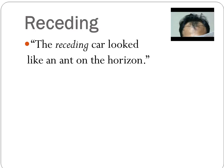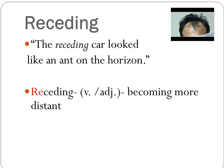So the first word is receding. The receding car looked like an ant on the horizon. Now in your notes, you don't need to write the sample sentence, but you should write the word, the part of speech and its definition, and any prefixes that appear on the slide. So based on this sentence and the image, what do you think receding means? Receding is a verb — it can also be used as an adjective — and it means to become more distant.